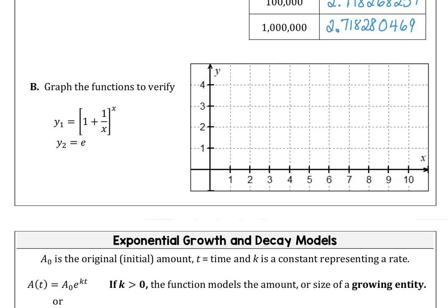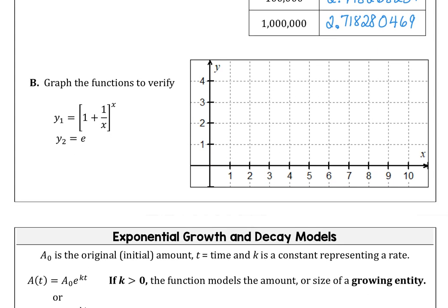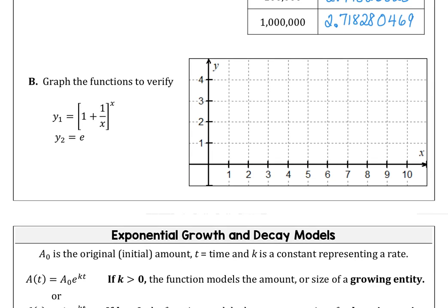As n grows unbounded, the y value is approaching 2.71828, which is our value for e. y equals e. That's my y sub 2. And y sub 1 is a rapidly growing function that looks like that.